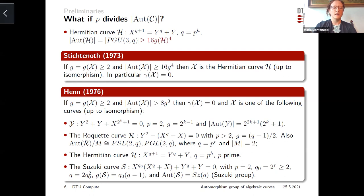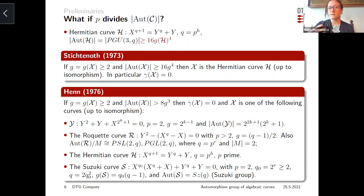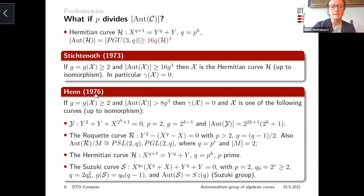Stichtenoth proved that the Hermitian curve is the only curve of genus at least two having at least 16g^4 automorphisms. So this is exceptional for the size of its automorphism group. This curve, being maximal, has p-rank equal to zero, giving an intuition that if we have a curve with many automorphisms, then it is most likely that the p-rank is equal to zero. In fact, if we have at least g^4 many automorphisms, then the p-rank is equal to zero.